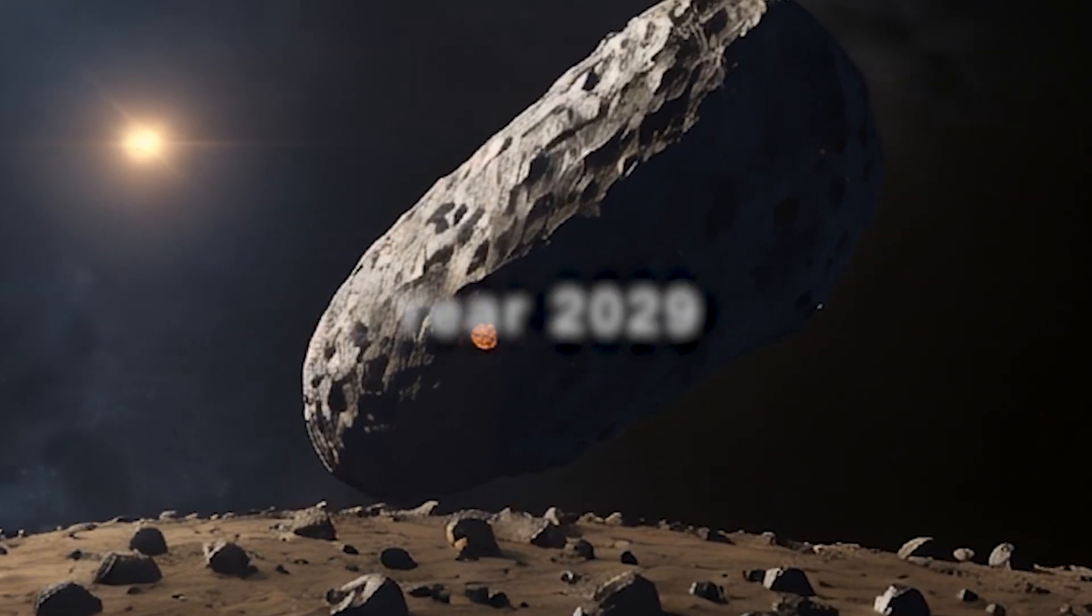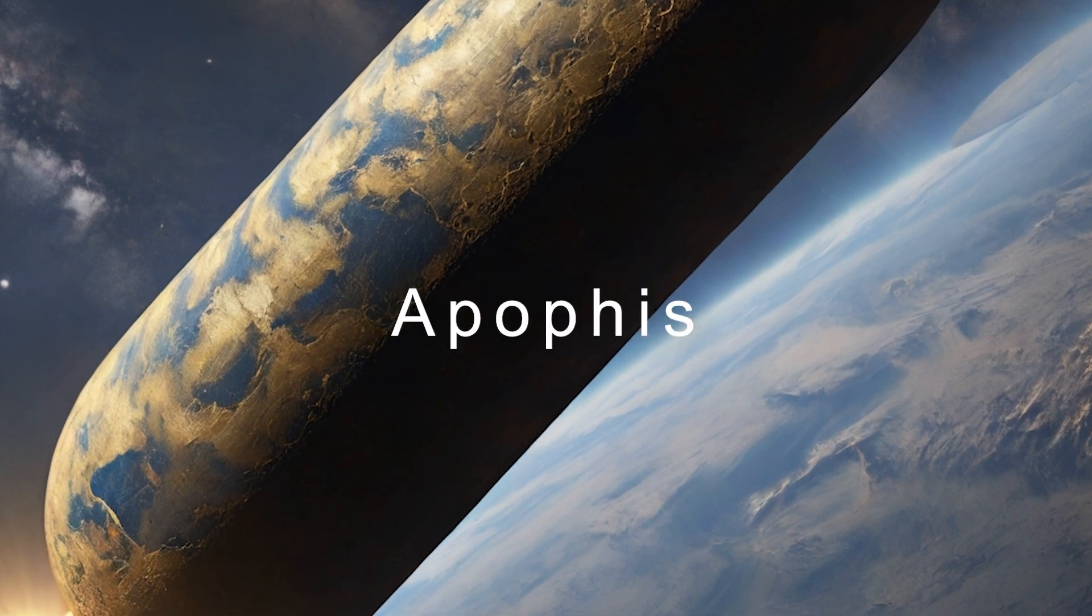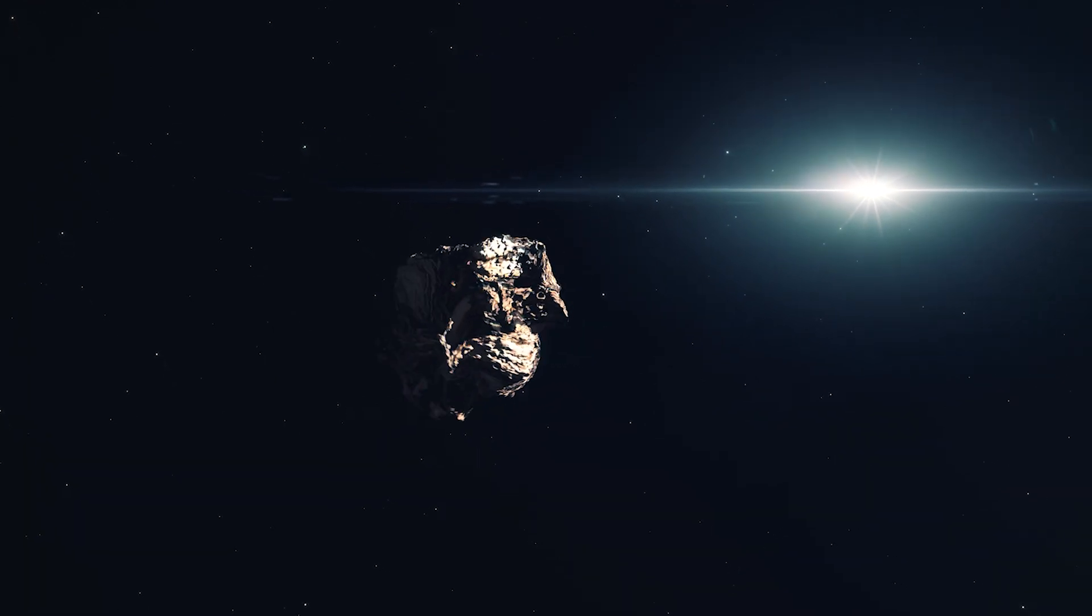On April 13th in the year 2029, this asteroid named Apophis will pass near Earth. We know for certain that Apophis, on Friday the 13th April 2029, is the size of the Rose Bowl. It'll get close enough to Earth that it will dip below Earth's communication satellites. It'll be the biggest, closest thing ever known to come near Earth.